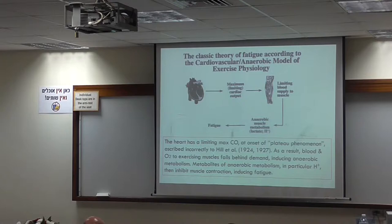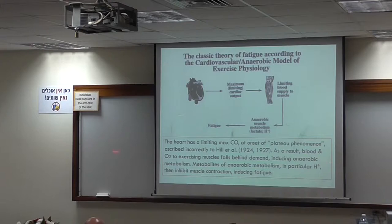The classical model of fatigue: the heart has a limiting maximum cardiac output. At onset of plateau phenomena, it cannot be increased anymore. Based on Archibald Hill's work from the beginning of the 20th century, the result is that blood and oxygen to the exercising muscle fall behind demand, inducing anaerobic metabolism. Metabolites of anaerobic metabolism, particularly hydrogen ions, accumulate and inhibit muscle contraction, inducing fatigue.